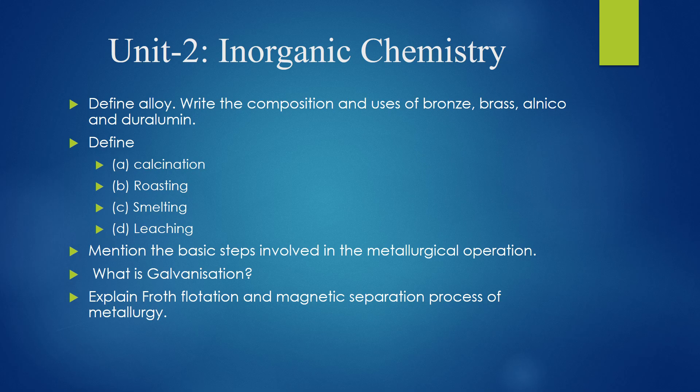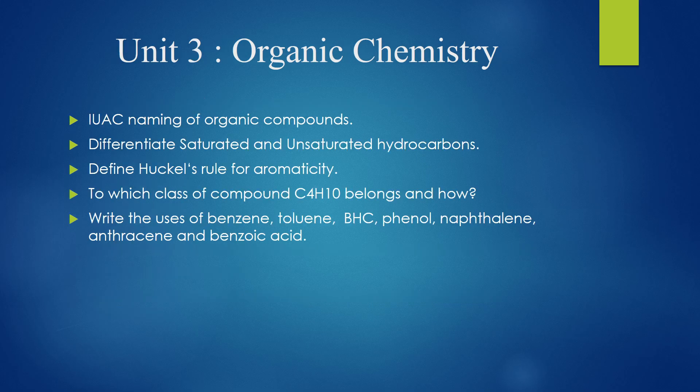For Unit 2, that is inorganic chemistry, we can expect questions like: define alloy, write the composition and use of bronze, brass, ironico, and duralumin. Next, it can ask definitions of calcination, rusting, smelting, or leaching. Next, mention the basic steps involved in metallurgical operations — what are galvanization, froth flotation, and magnetic separation process of metallurgy.